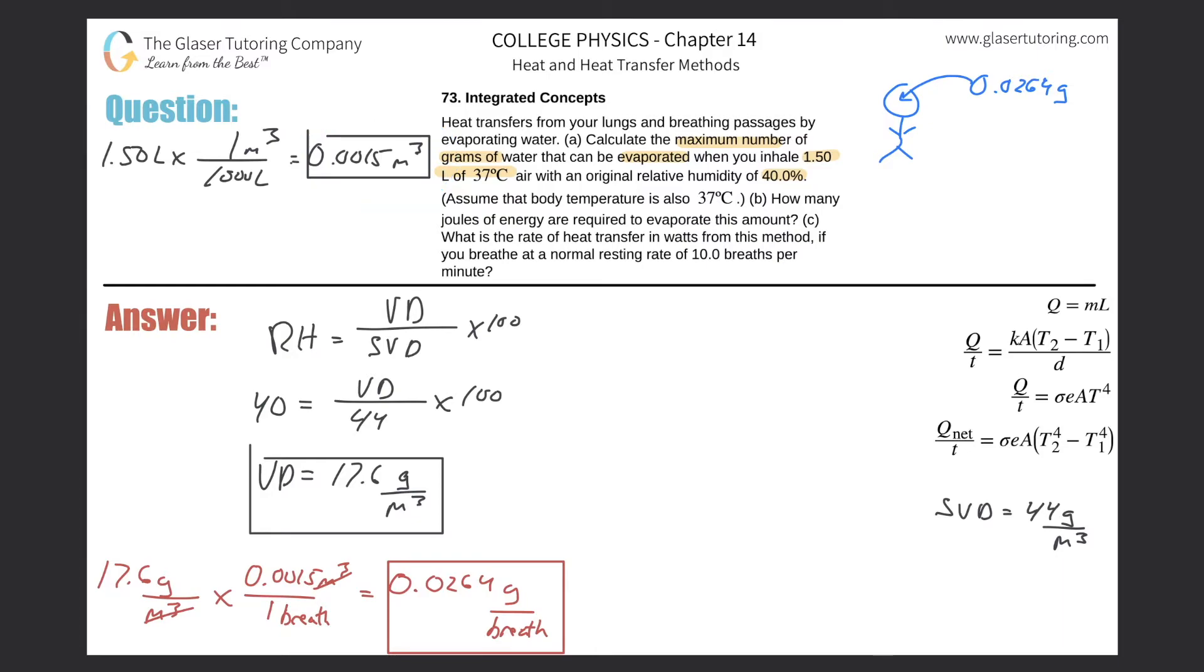Well, the maximum density is this, right? It's 44 grams per cubic meter. So if I were to take that and then multiply it by the volume per breath, this is what the math would look like. We would take now 44, multiply it by 0.0015, and here we get about 0.066 grams per single breath.